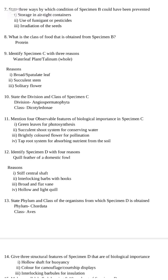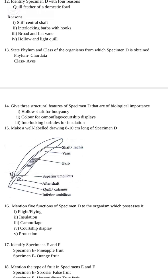Number 12: Identify specimen D with four reasons — it is the quill feather of a domestic fowl. Reasons: it has a central shaft, interlocking barbs with hooks, broad and flat vane, and hollow and light quill. Number 13: State the phylum and class of the organism from which specimen D is obtained — phylum Chordata, class Aves. Number 14: Give three structural features of specimen D of biological importance — hollow shaft for buoyancy, color for camouflage or courtship display, and interlocking barbs for insulation.